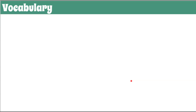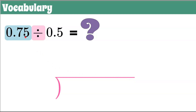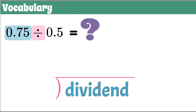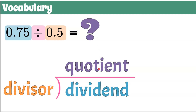Let's begin by reviewing some vocabulary pertaining to division. Here's a division problem and we want to know what it equals, so we need to understand some vocabulary words. We have 0.75, which we refer to as the dividend — that goes underneath our long division symbol. 0.5 is what we call our divisor. The dividend is being divided by the divisor. And then we have our quotient — that's our answer, the result of a division problem.